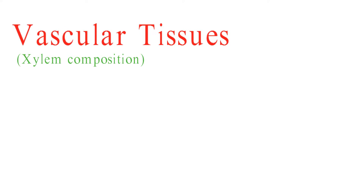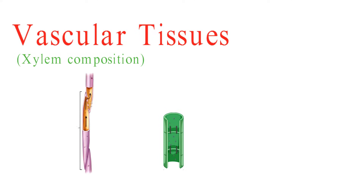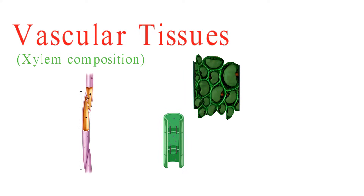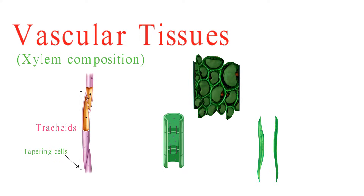Xylem consists of several key cell types, including tracheids, vessel elements, xylem parenchyma, and xylem fibers. Tracheids are long, tapering cells that make up a significant portion of the xylem in most vascular plants. They have thick walls and small, overlapping pits.